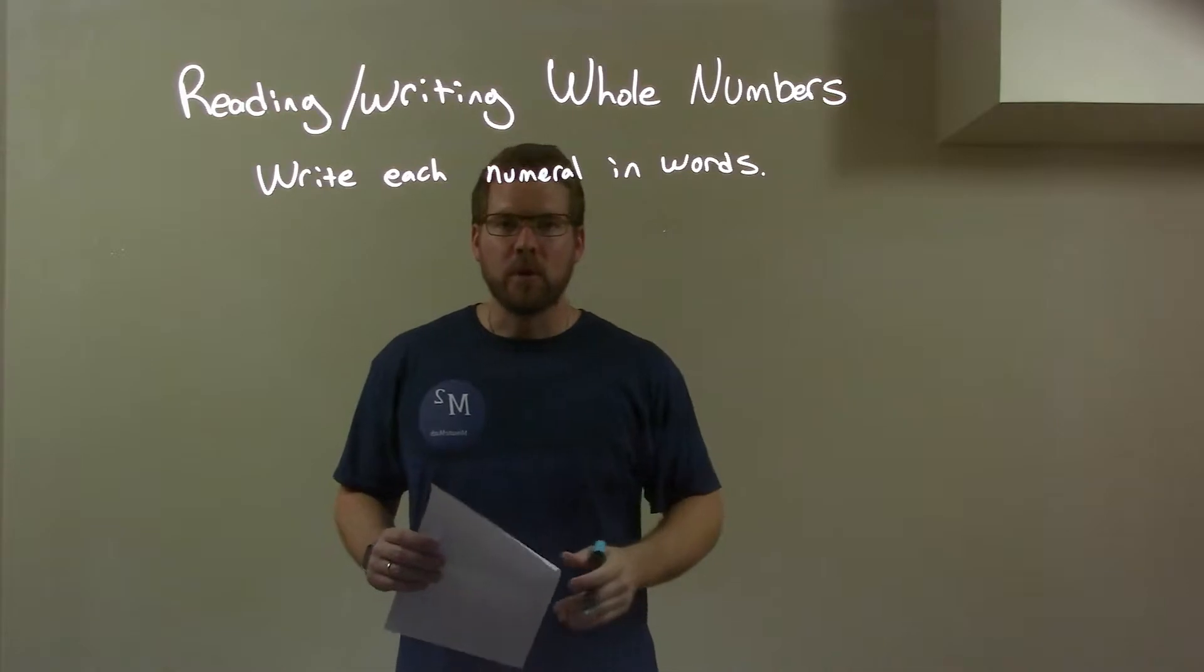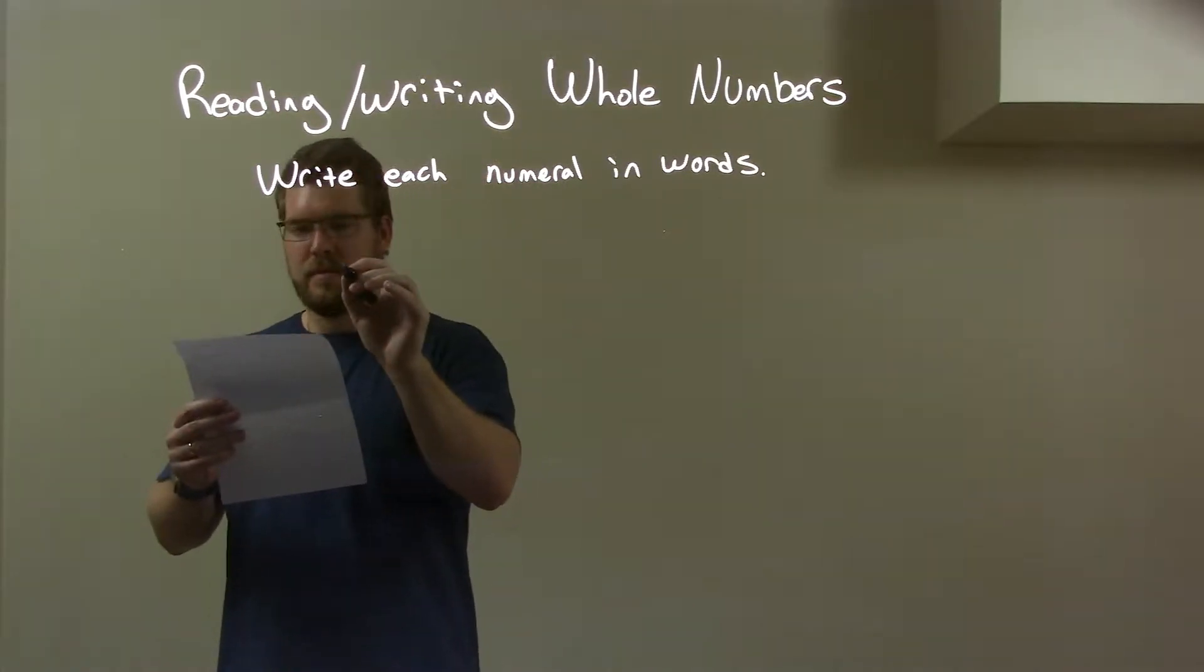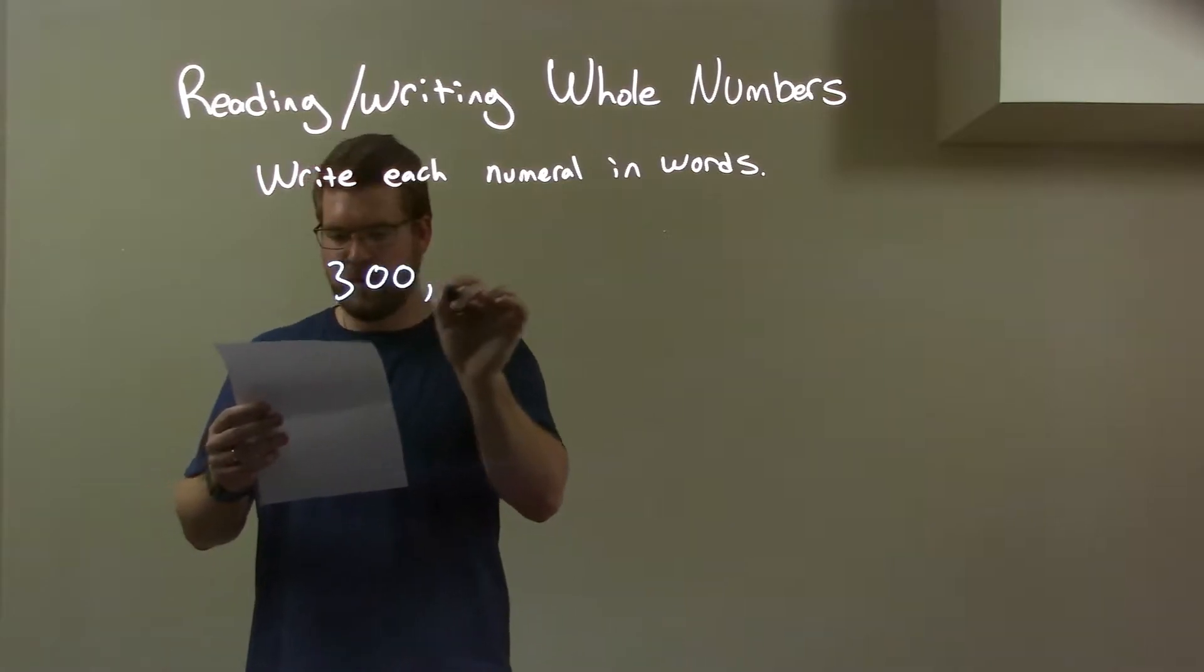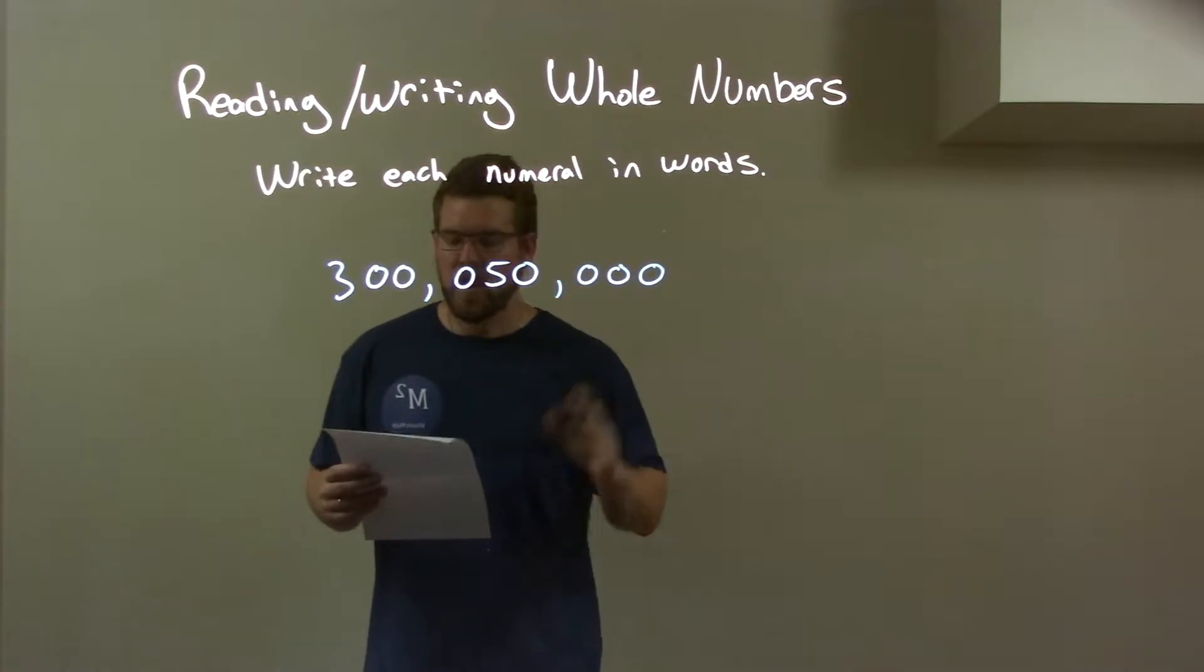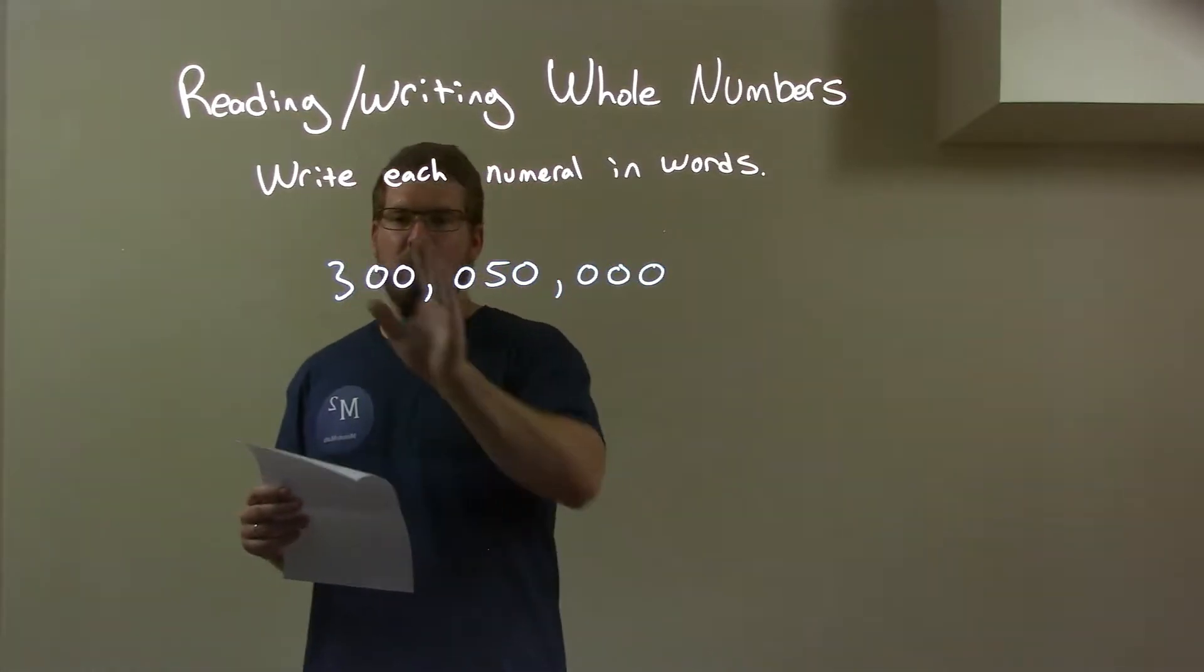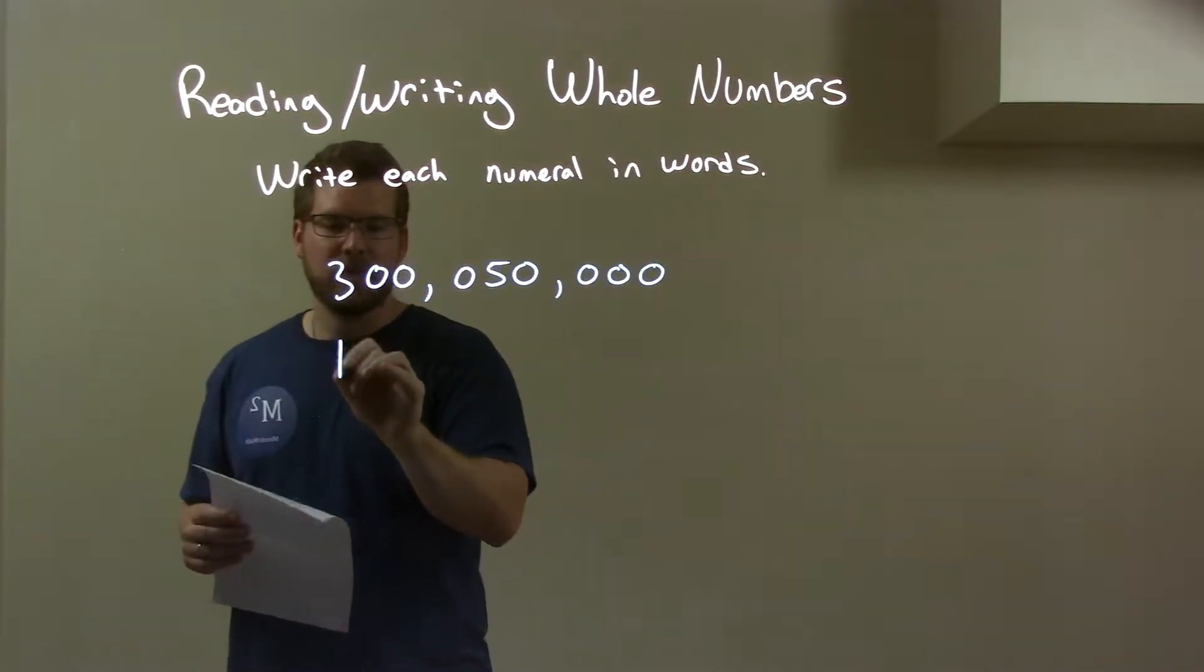I'm going to write each numeral in words. So if I was given this number: three, zero, zero, zero, five, zero, zero, zero, zero. Well, the first thing I need to do is identify what number do I see. Ignoring the zeros, I see 300. So we have 300.